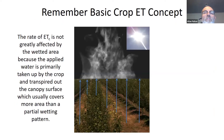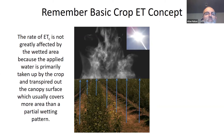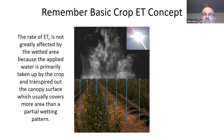To begin to explore this question, let's think back to the basics of the crop evapotranspiration concept. The rate of crop evapotranspiration is not greatly affected by the wetted area, because the applied water is primarily taken up by the crop and transpired out the canopy surface, which usually covers more area than the partially wetted pattern from your micro or drip irrigation system. We have the sun shining down on a prune orchard, providing the energy that drives evapotranspiration. Most of the water is coming out through the tree rows, the canopy, and less water is coming out the dry orchard middles.